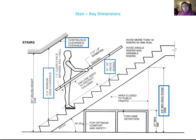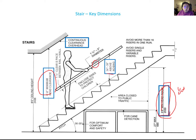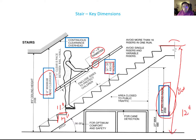Key dimensions for stair design: 80-inch minimum head clearance; handrail at 34 to 38 inches with a grip diameter of 1¼ to 2 inches; 7-inch maximum riser and 11-inch minimum tread; and if a single flight exceeds 12 feet of rise, you must provide a landing space.